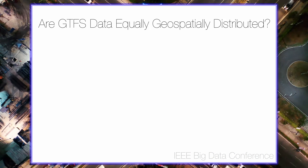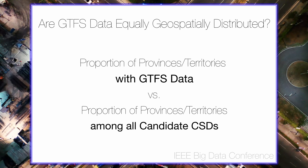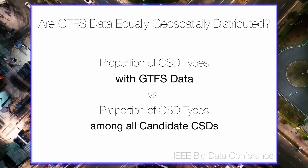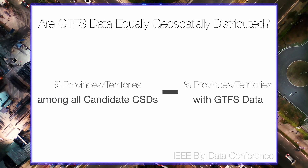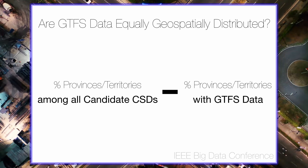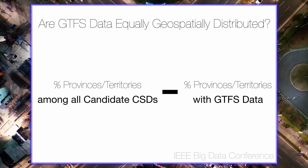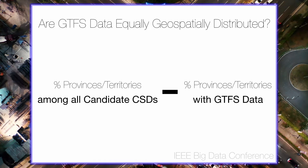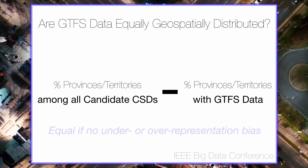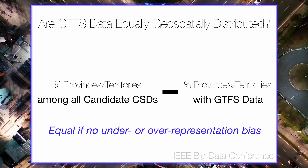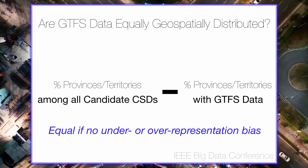Another important question of this work is whether the collected GTFS data is equally available across geographical regions — things like provinces and territories — as well as across different CSD types such as cities, towns, or municipal districts. To quantify whether the available static GTFS data is either under or over-represented in a given region or CSD type, we determine the difference of the proportion of represented CSDs with GTFS data from the proportion of total candidate CSDs. Thus, when grouping all CSDs by province or territory, an equal GTFS availability in a region would result in the proportion of municipalities with discoverable GTFS being equal to the proportion of candidate CSDs within that region.